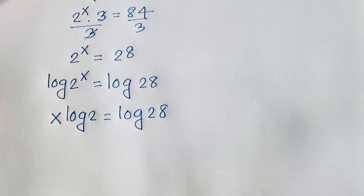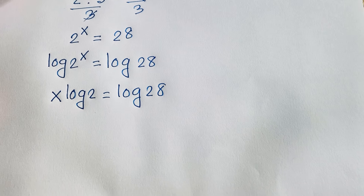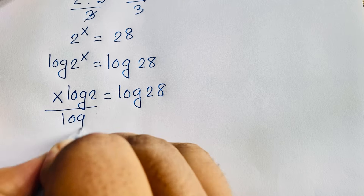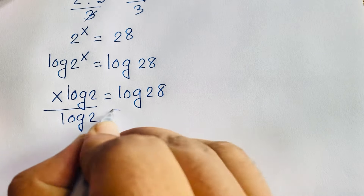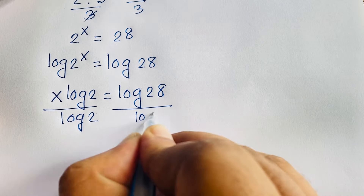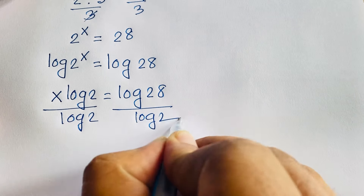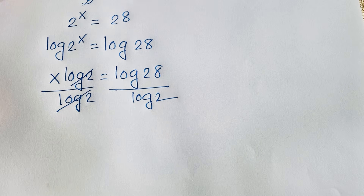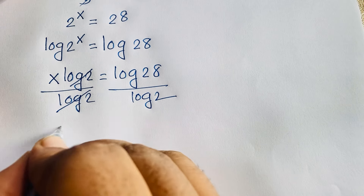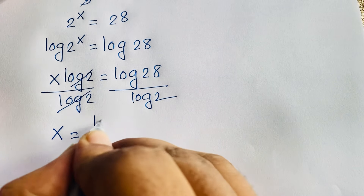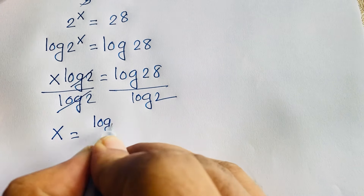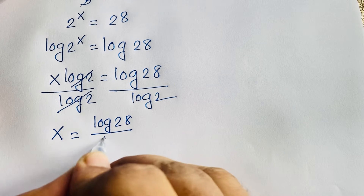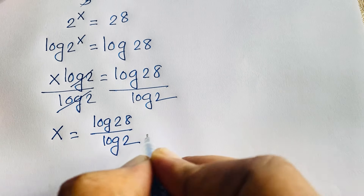Dividing both sides by log 2 — the log 2 terms cancel — we find x is equal to log 28 over log 2.